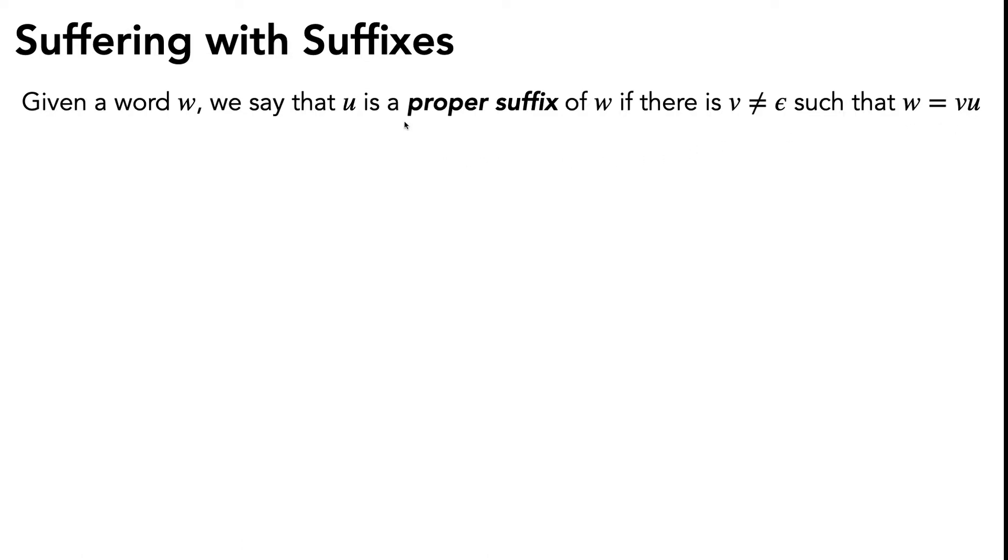Before we go on with the problem, let's make sure we have the definition of proper suffix down. If w equals the string m-a-t-h, take a moment and make sure you know what the proper suffixes of w would be. They would be a-t-h, t-h, h, and the empty string. Importantly, the proper suffixes don't include the original string and they do include the empty string.